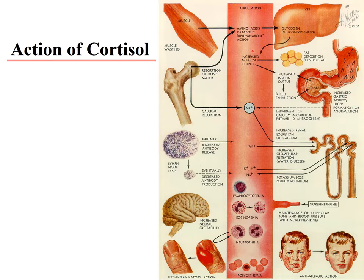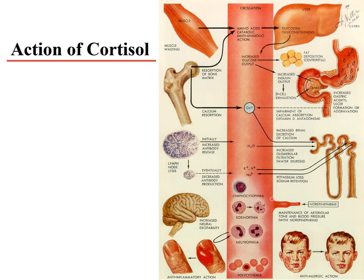With excess glucocorticoids, glucose is deposited as adipocytes — causing central obesity, a very common feature. Glucocorticoids have a permissive effect on catecholamine receptors, sensitizing them, so hypertension can develop with increased vascular contraction and peripheral resistance. Increased acid secretion can cause gastric ulceration.